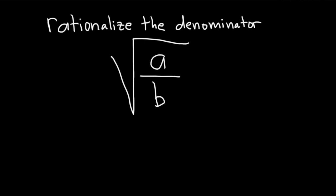Hi, in this problem we have the square root of a over b and we're asked to rationalize the denominator. So let's go ahead and go through it.